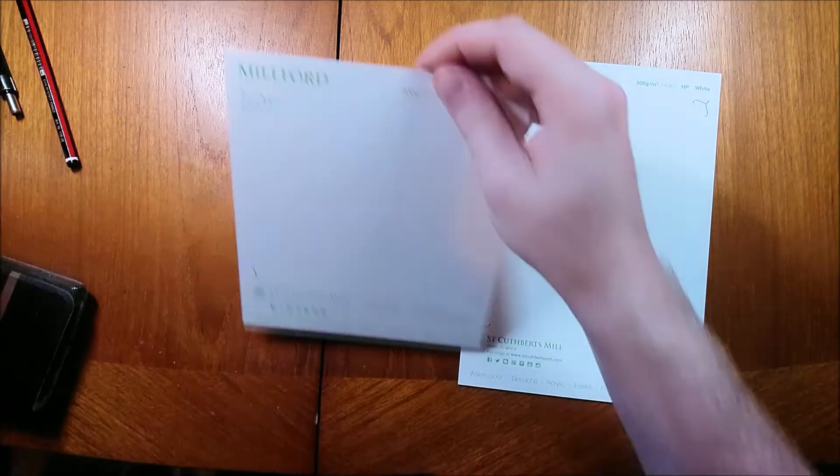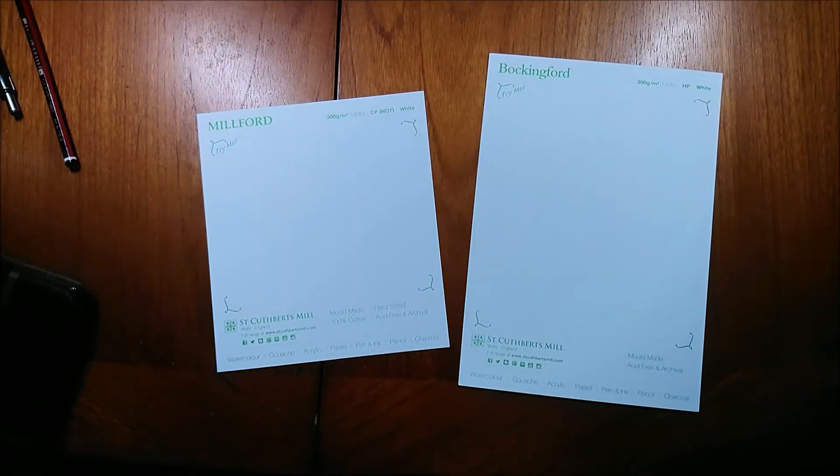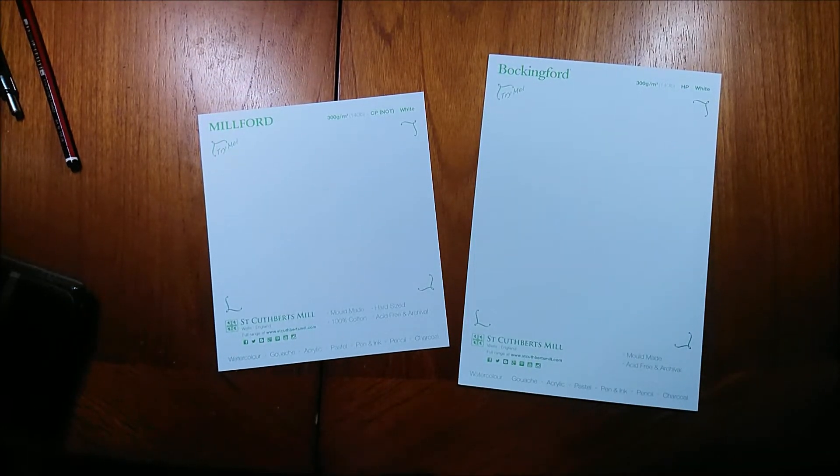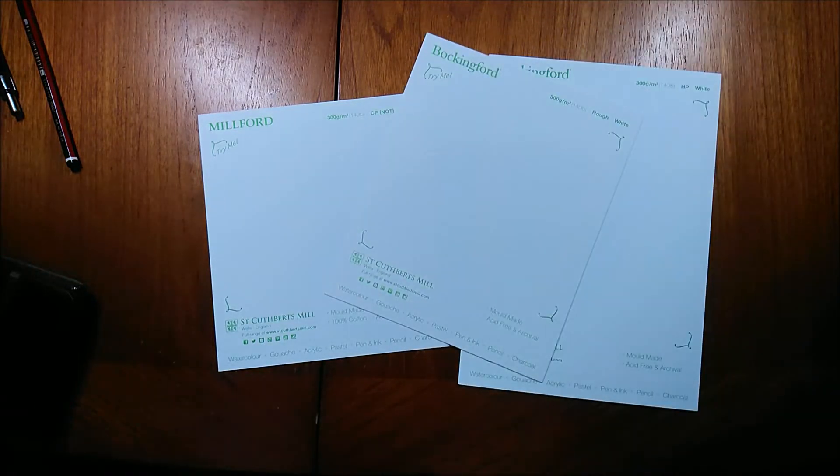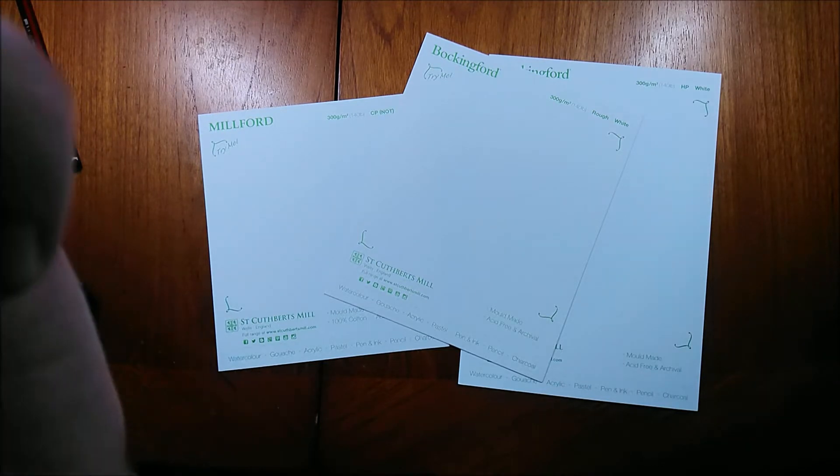The two main ones are cold pressed and hot pressed. Cold press has a slight texture to the paper, and hot pressed is smooth and flat with a nice satin finish. There is also rough textured watercolor paper. This means that the paper is more textured than cold pressed, but it does have its uses.